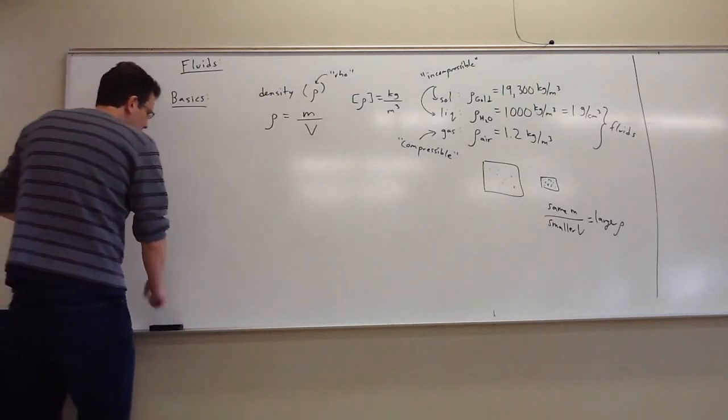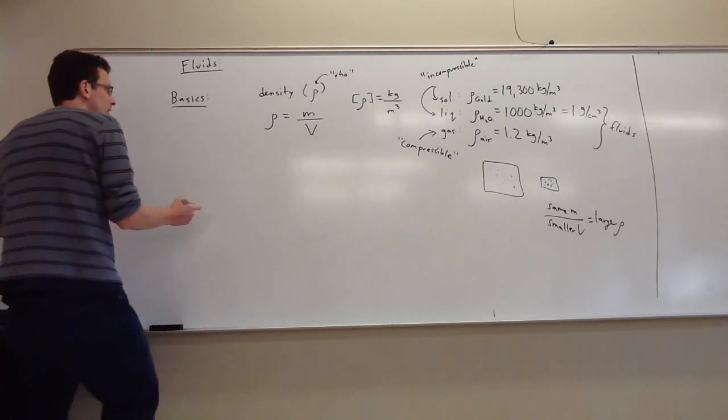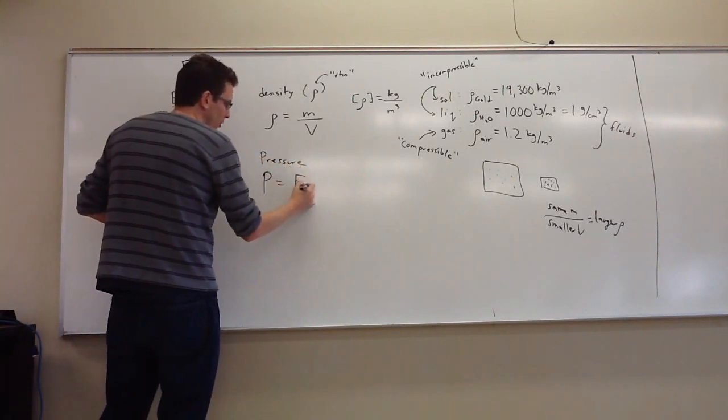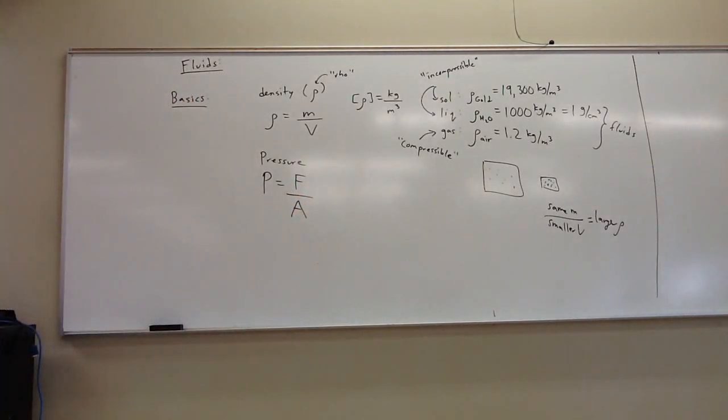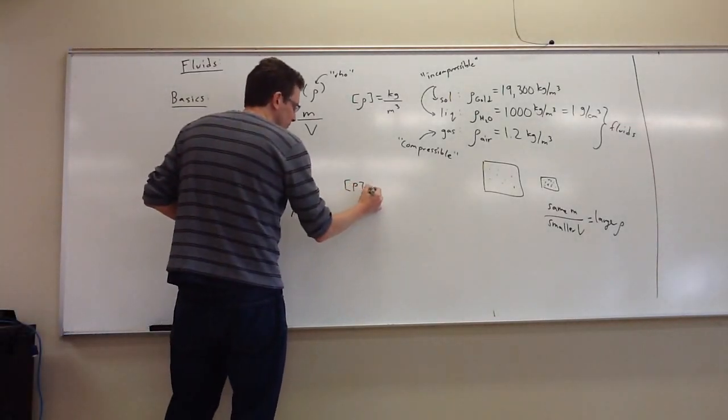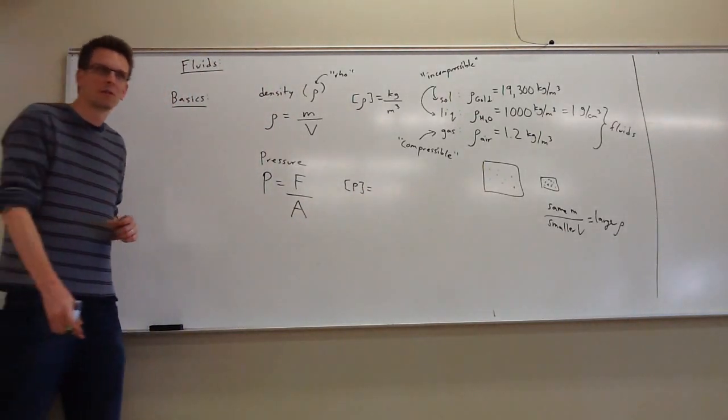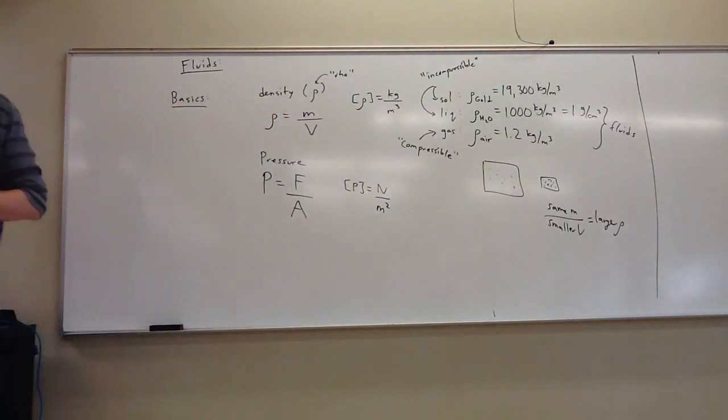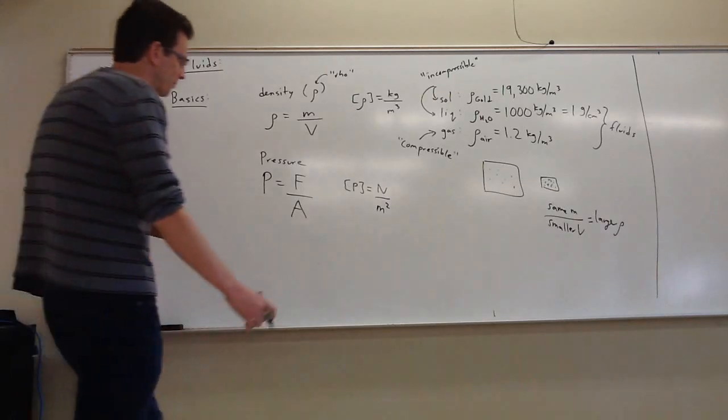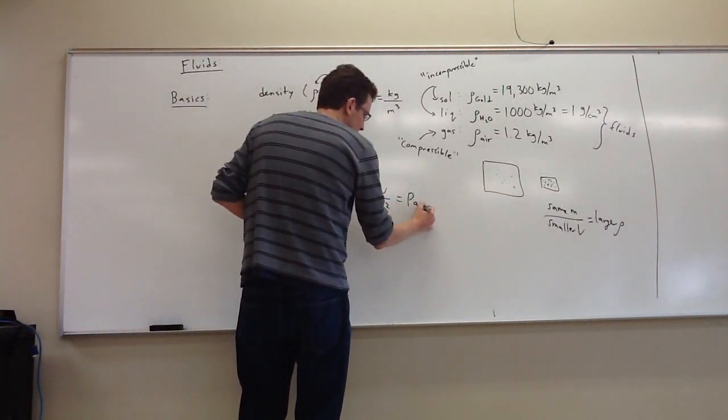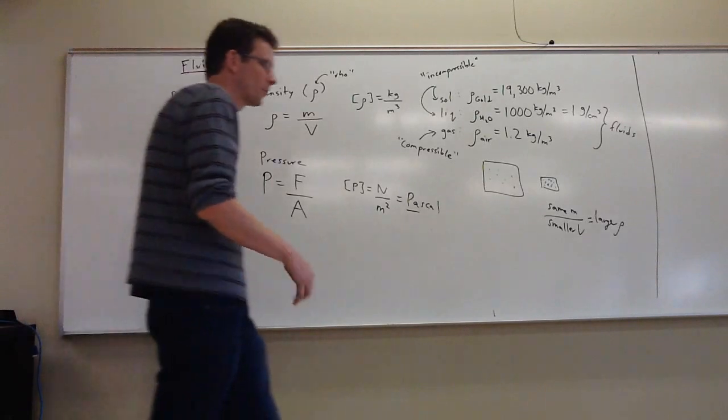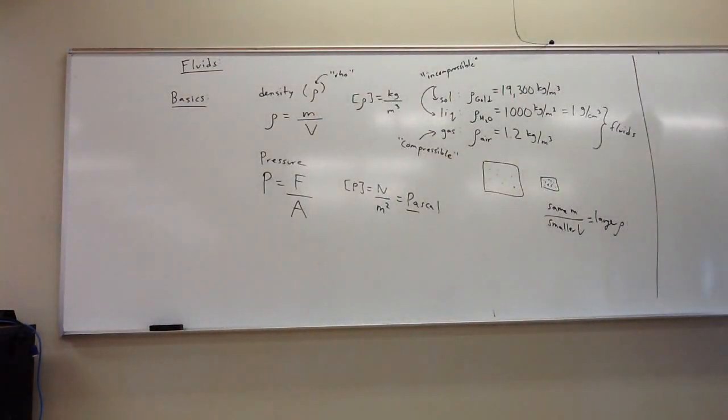The next basic thing, hopefully you've seen density, is pressure. Pressure is defined as the force per area, not just force, but how much force is applied per area. The units of pressure for us - what's the unit of force? Newtons. And area? Meters squared. So it's measured in newtons per meter squared. That's abbreviated as a Pascal, PA for short. Pascals are SI units for pressure.